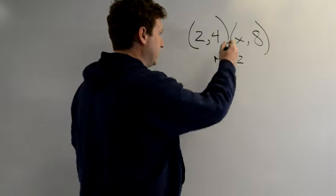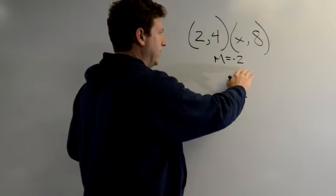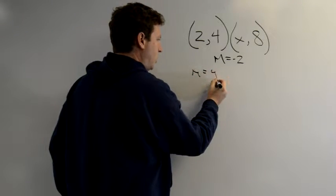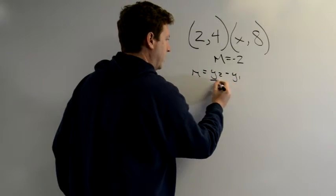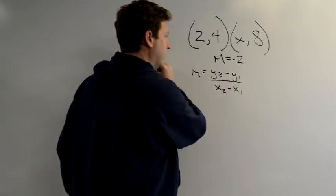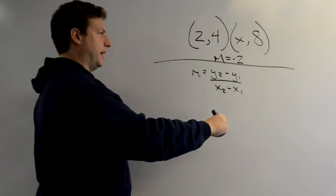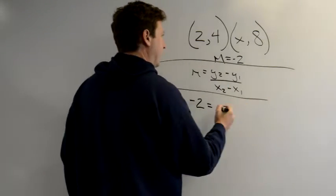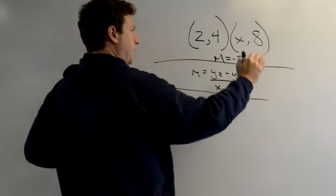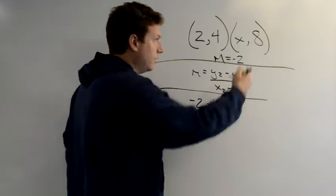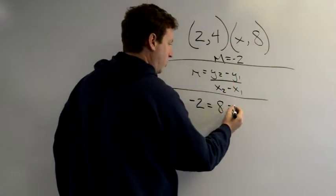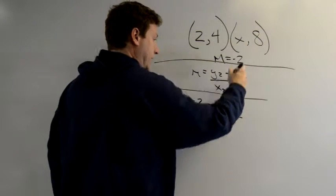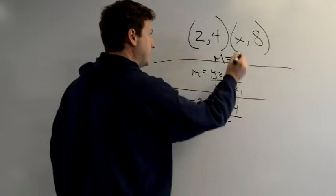Now, we have plenty of information, so I'm going to plug this in to the slope formula, which we know is m equals y2 minus y1 over x2 minus x1. So, there's our formula there, and I'm just going to plug in. I'm going to use my negative 2 here, and then I'm going to go ahead and try to plug in what I can. I have a y2, so I'm going to go 8 minus 4, and I'm going to put that over x2, so I'll call that x minus 2.